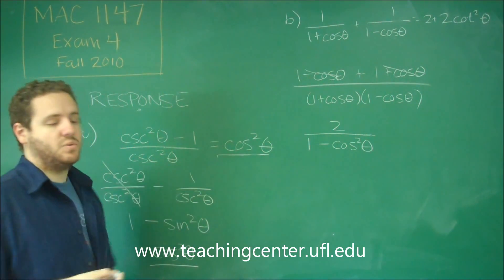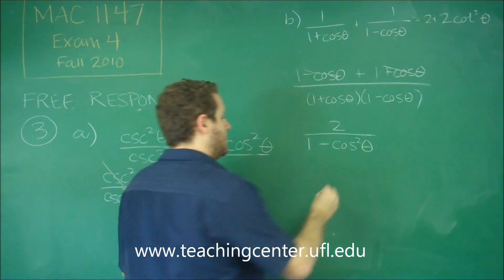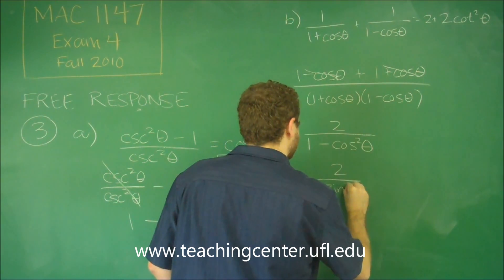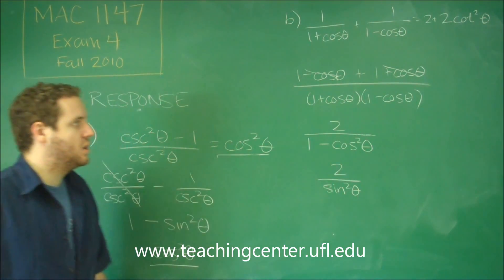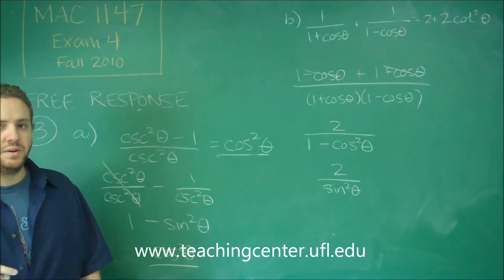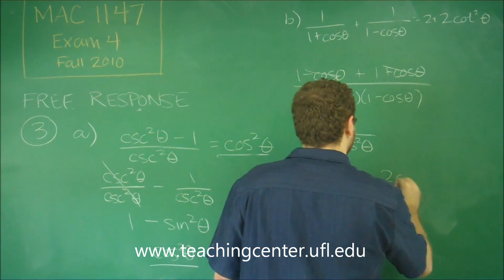One minus cosine squared, using our trig identity, is just sine squared. So we get two over sine squared theta. So we need to turn this into two plus two cotangent squared. So lastly, let's just say this is two cosecant squared theta. So we want to show that this is the same thing as that.